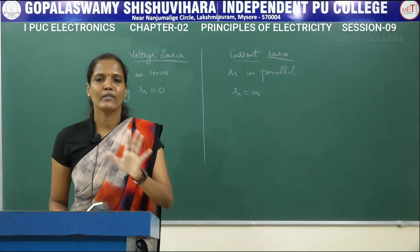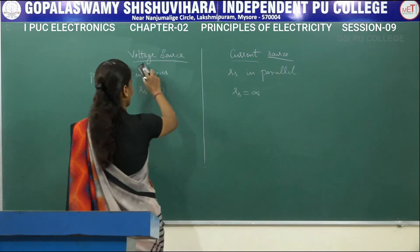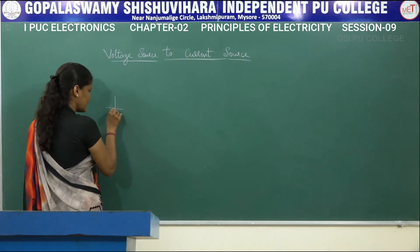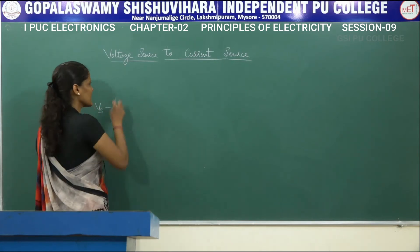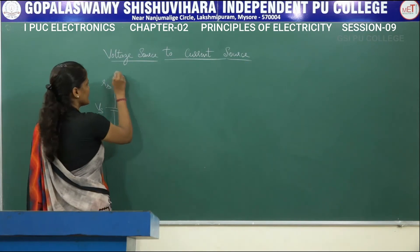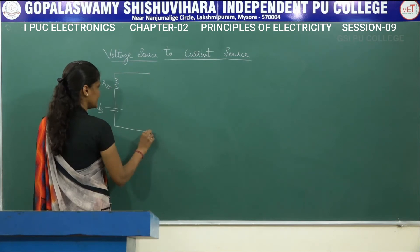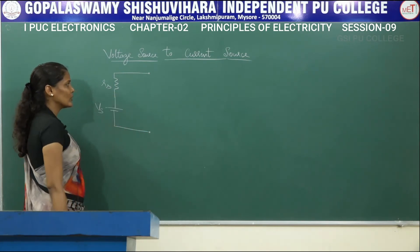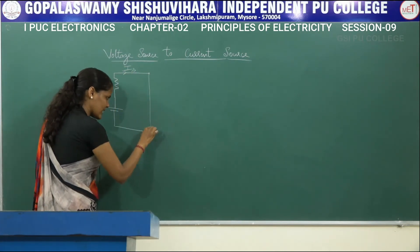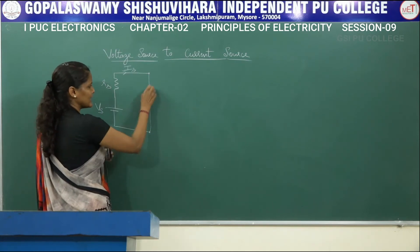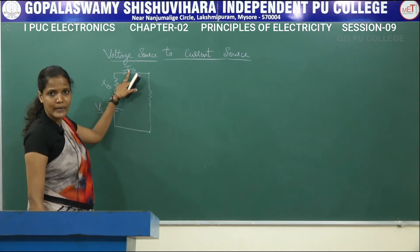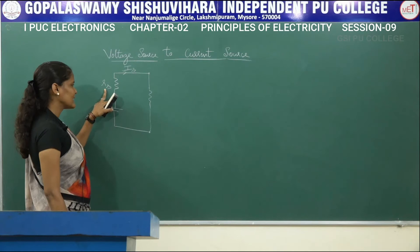Now we will see how to convert a given voltage source into a current source and vice versa. To convert a voltage source into a current source: we have a voltage source Vs connected in series with an internal resistance Rs. The current Is will flow only when there is a load connected. Is is denoted as the current, and Rs is the internal resistance.